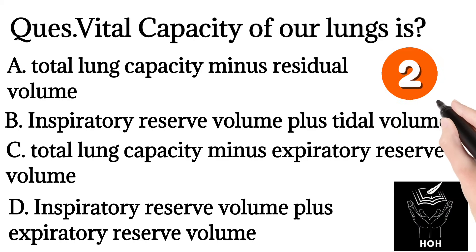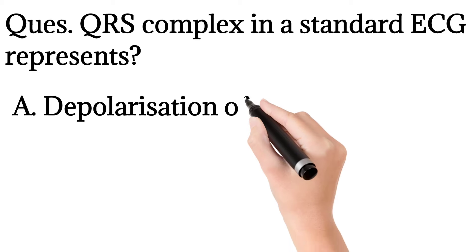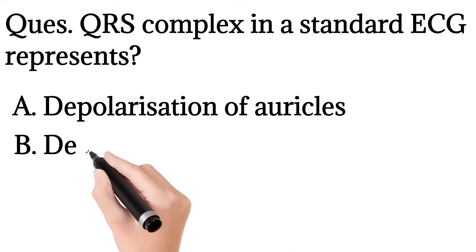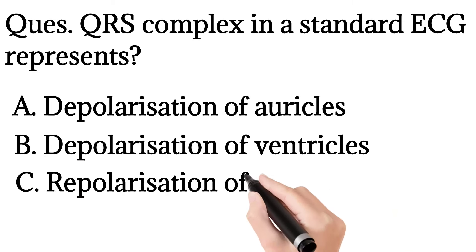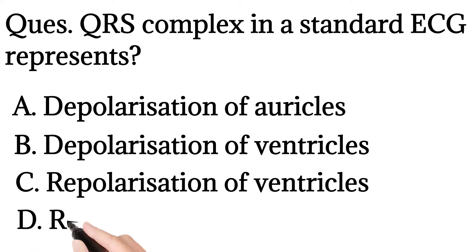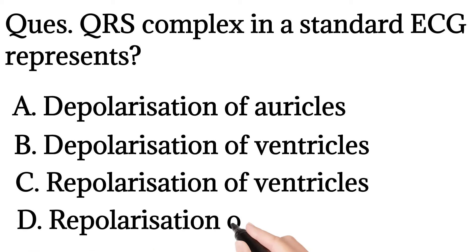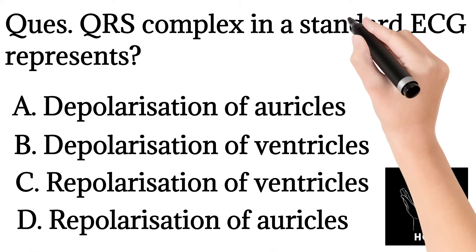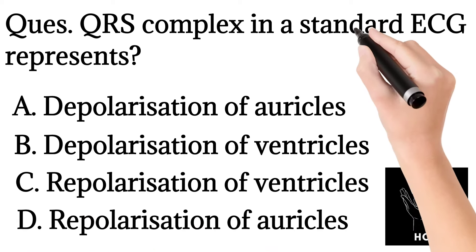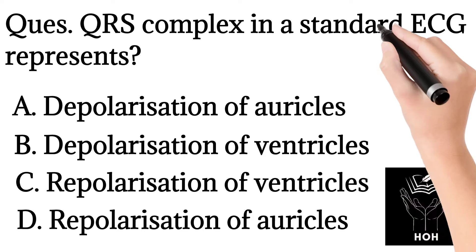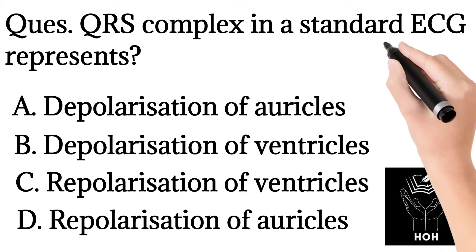3. QRS complex in a standard ECG represents: depolarization of auricles, depolarization of ventricles, repolarization of ventricles, or repolarization of auricles.